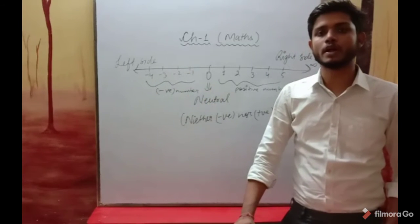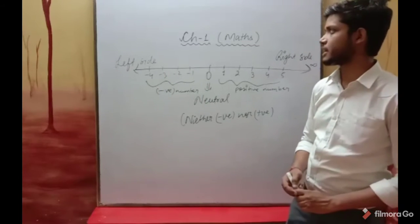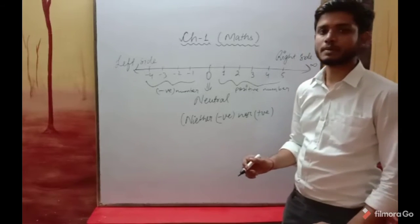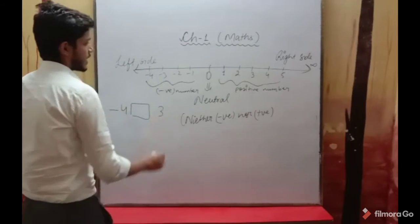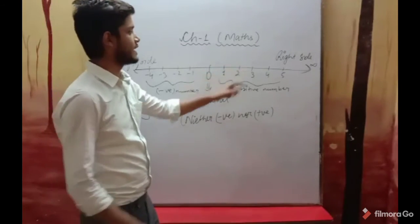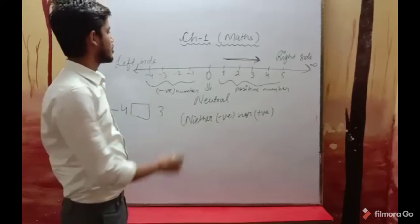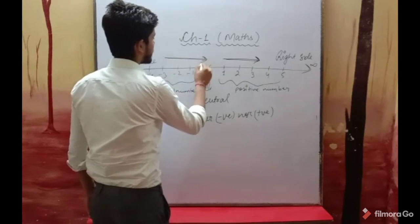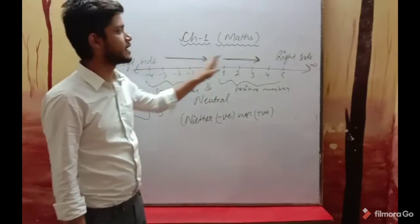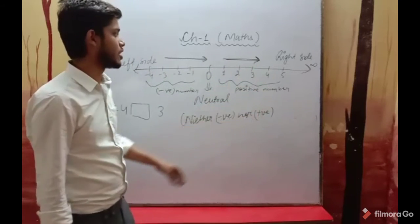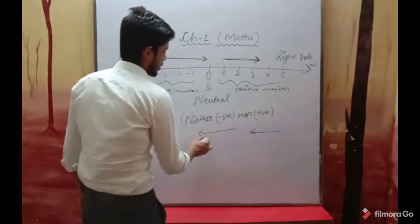Now let's talk about positive numbers and negative numbers in the context of integers. For example, compare minus 4 and 3. If we move to the right side on the number line, the numbers become greater.